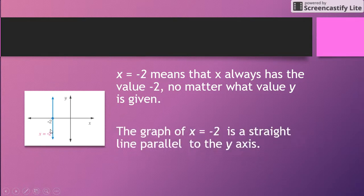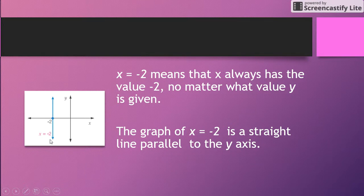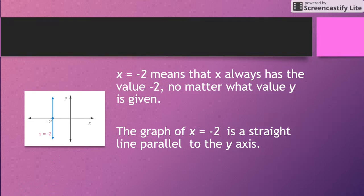Exactly the same, but just the opposite way around. So the graph of x = -2 is a straight line parallel to the y-axis. All right, just always keep that in the back of your mind. Thanks, guys.